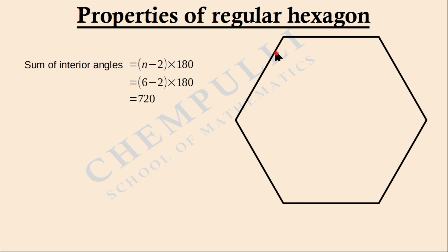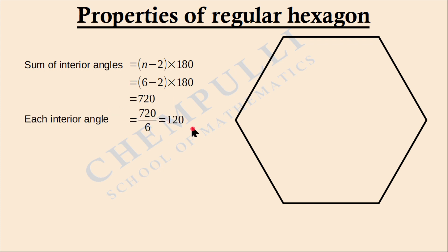Next, we find each interior angle. Since it is a regular hexagon, all six angles are equal. So each interior angle is 720 ÷ 6 = 120 degrees.